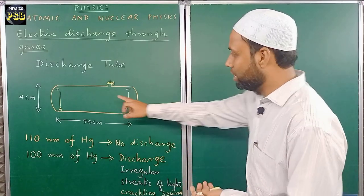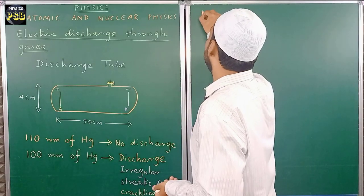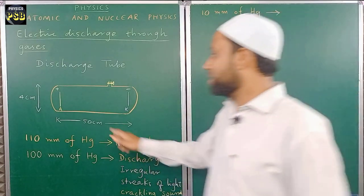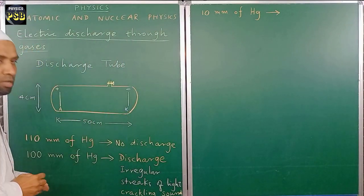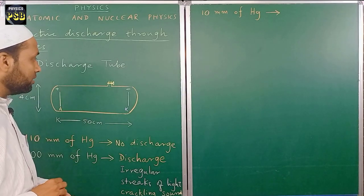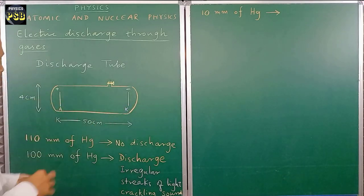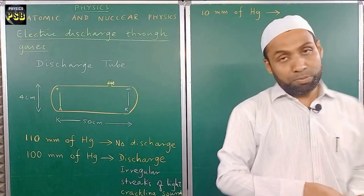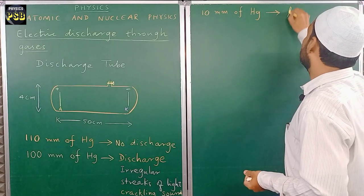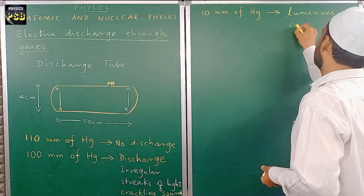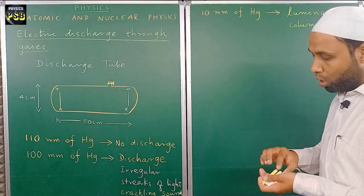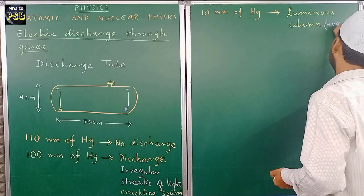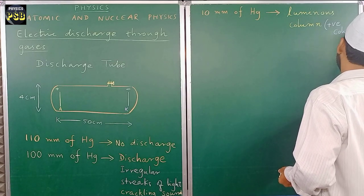When the pressure inside the discharge tube is reduced to 10 millimeters of mercury, the gap between anode and cathode shows a luminous band which extends from the anode towards the cathode. This luminous column observed at 10 millimeters of mercury is called the positive column, because it starts from the anode.